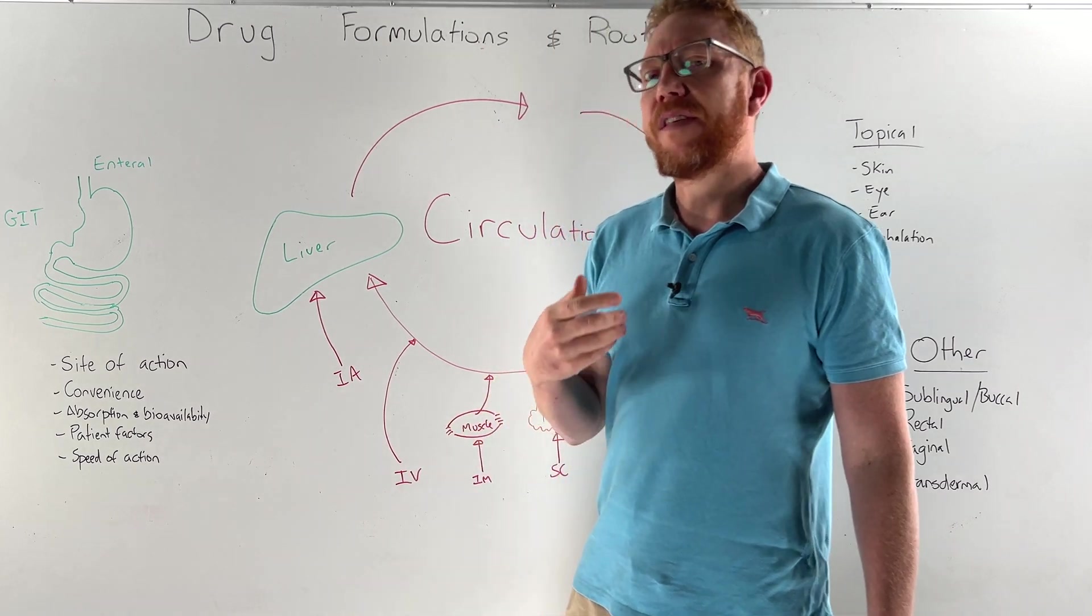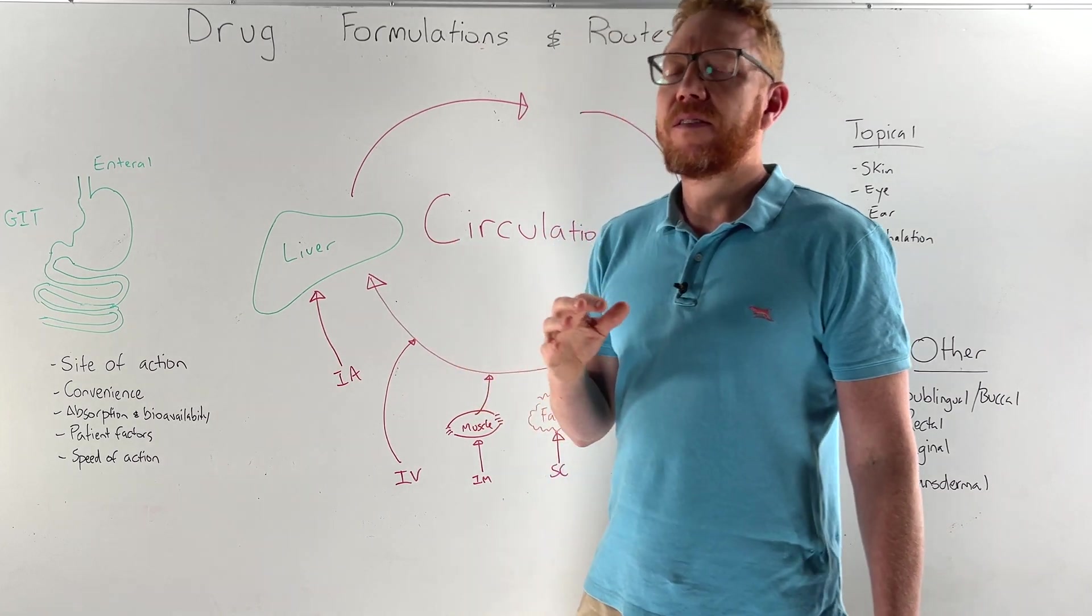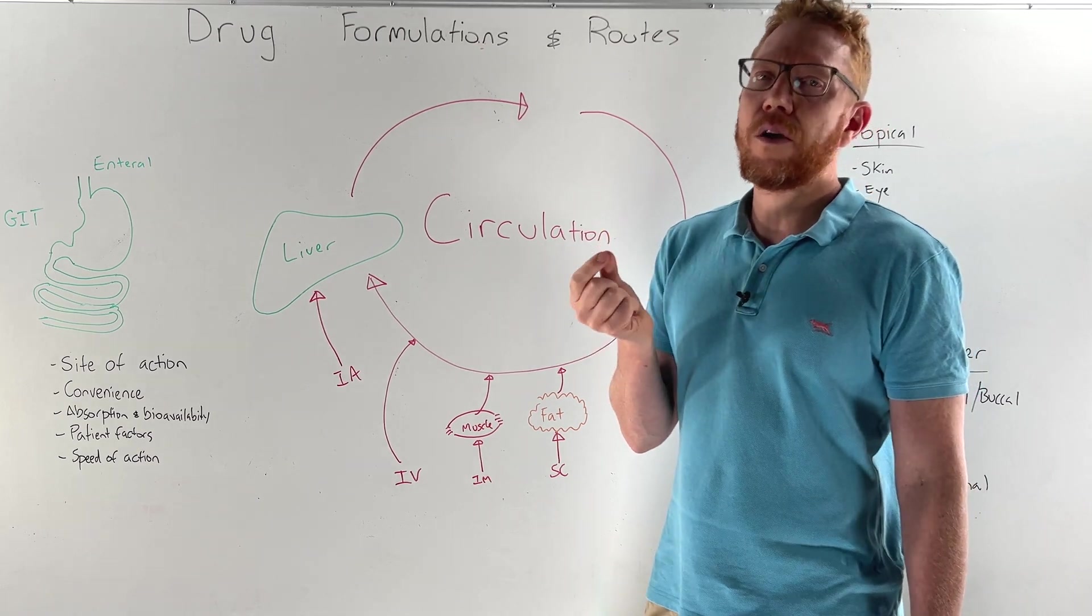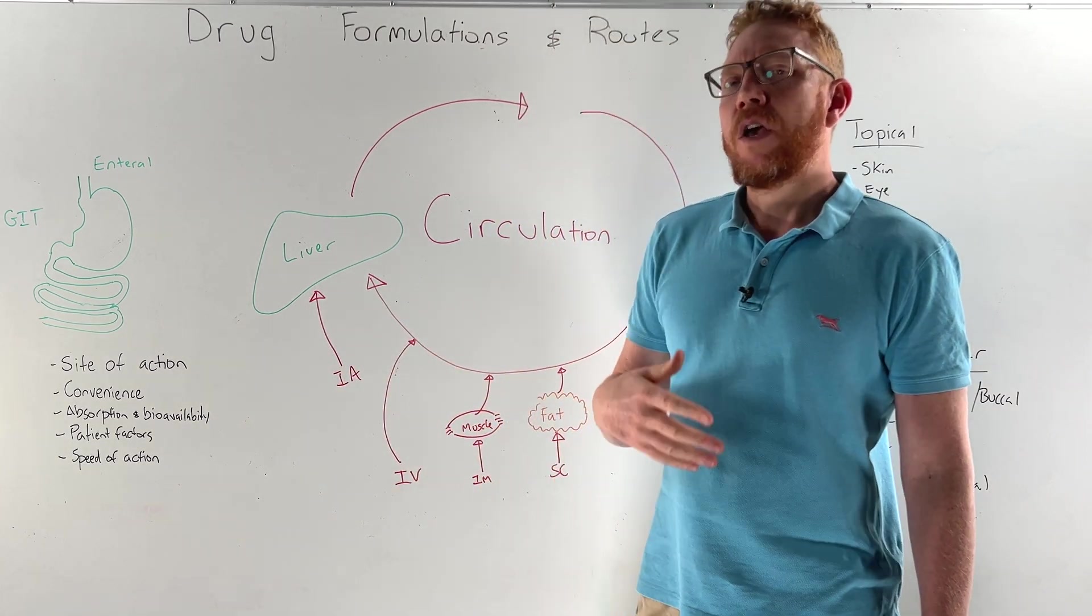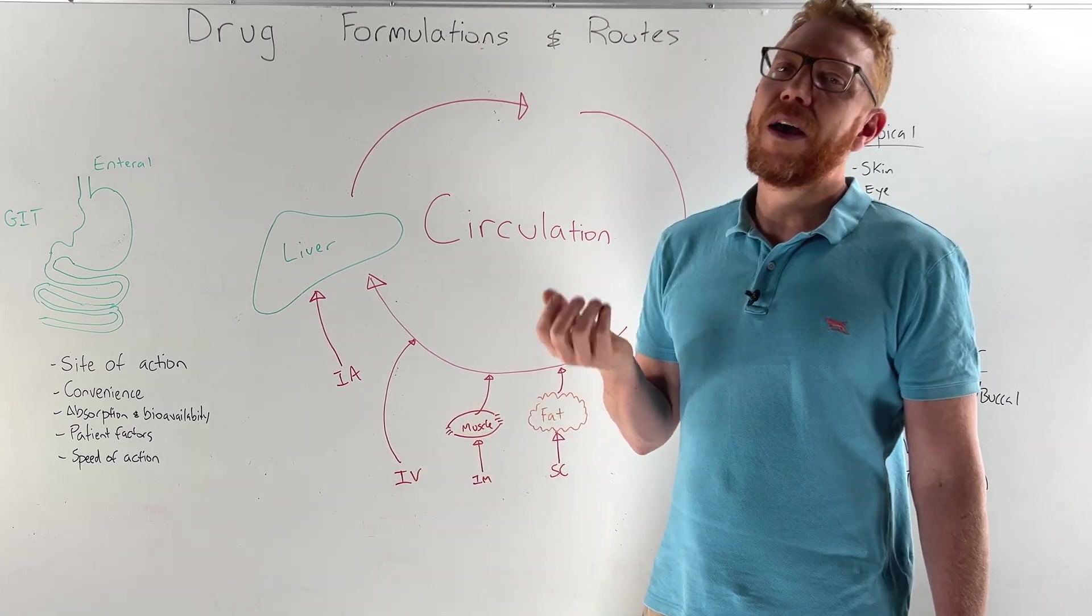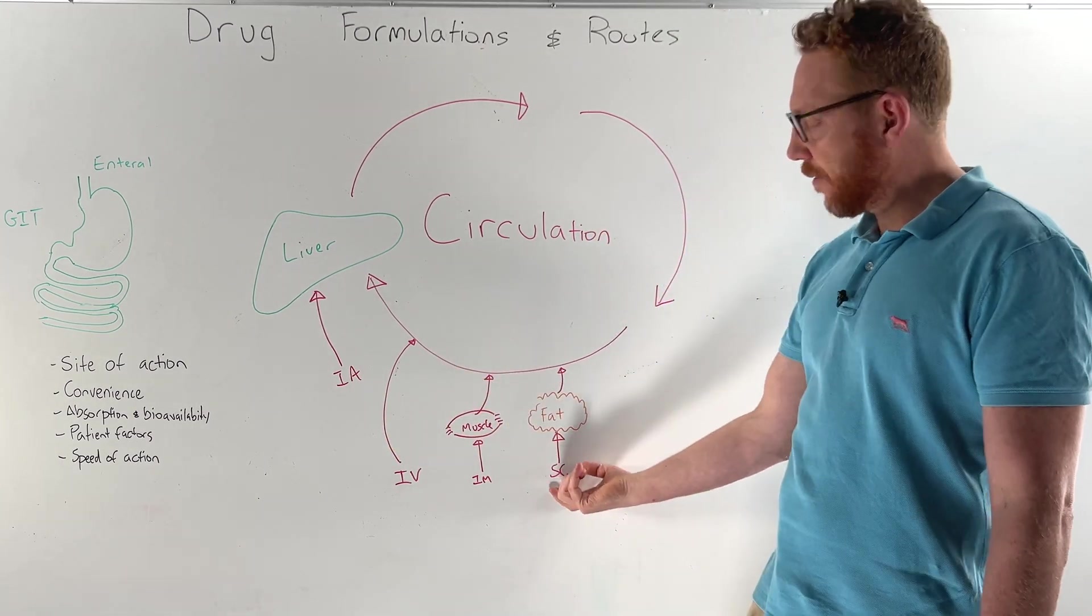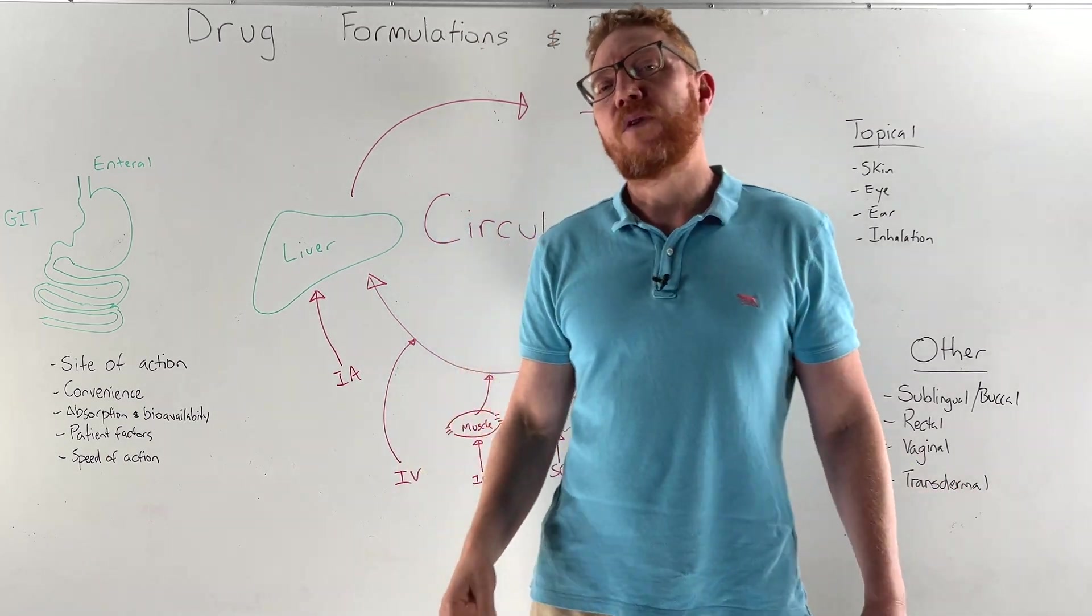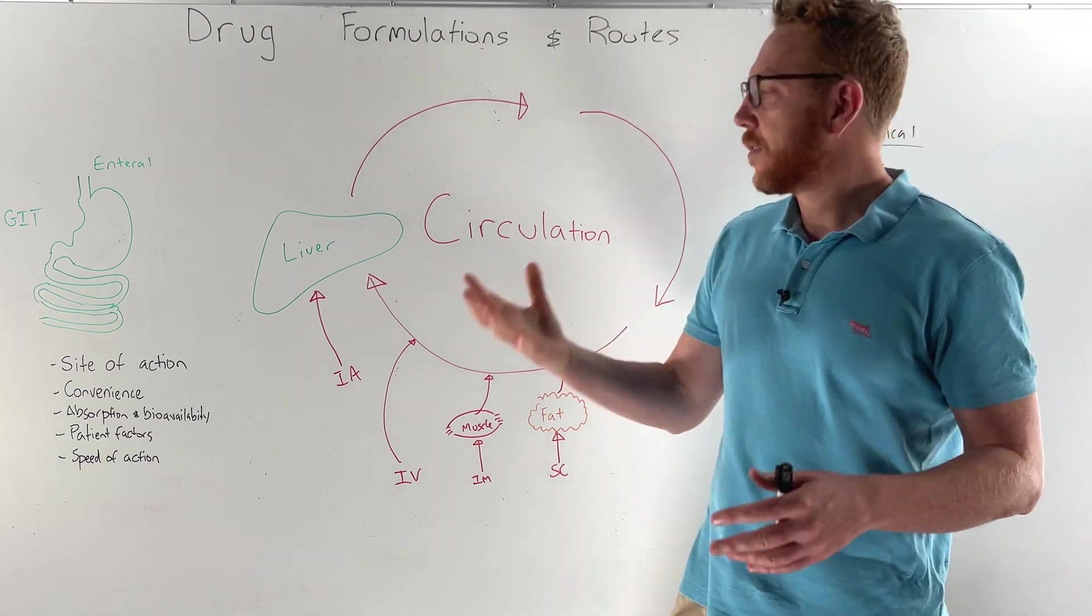Then patient factors. If they're elderly with swallowing issues we probably can't give tablets, we might consider fluids or suspension. Same goes with paediatrics - the child or infant won't swallow tablets so we may give it as a syrup. Finally we have speed of action. If we want the medication to work instantaneously we probably give it IV. If we want it to work in about 20 minutes oral administration is fine. About an hour we could give it subcutaneously. Over the whole day we could consider transdermal. For weeks and months we could do a depot injection which slowly absorbs and reaches the circulation.